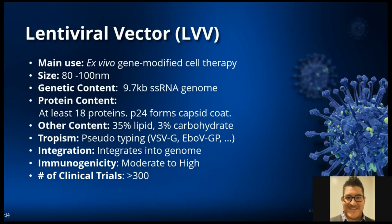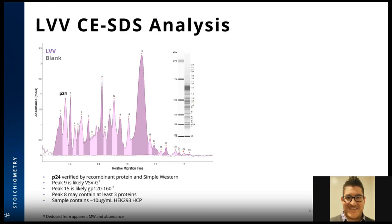LVV is a complex virus with more than 18 proteins consistently characterized. We were able to detect 23 unique protein peaks in an LVV sample from Takara with the CESDS method — quite a different profile from AAV. The second peak from the left is P24, verified by recombinant protein spiking as well as by our Simple Western platform. By molecular weight, we can likely label peak 9 as VSVG and peak 15 as GP120. We know this sample contains around 10 micrograms per mL of HEK293 host cell protein, which may contribute to additional peaks observed.